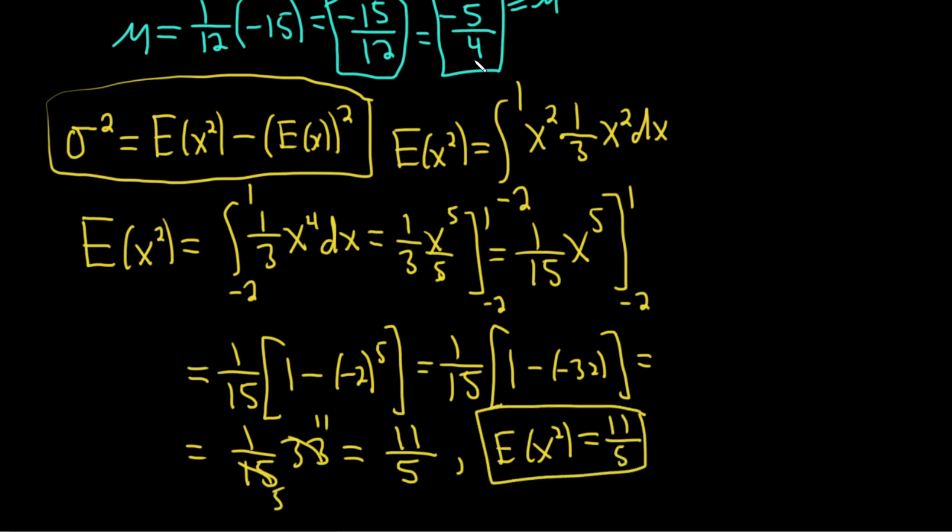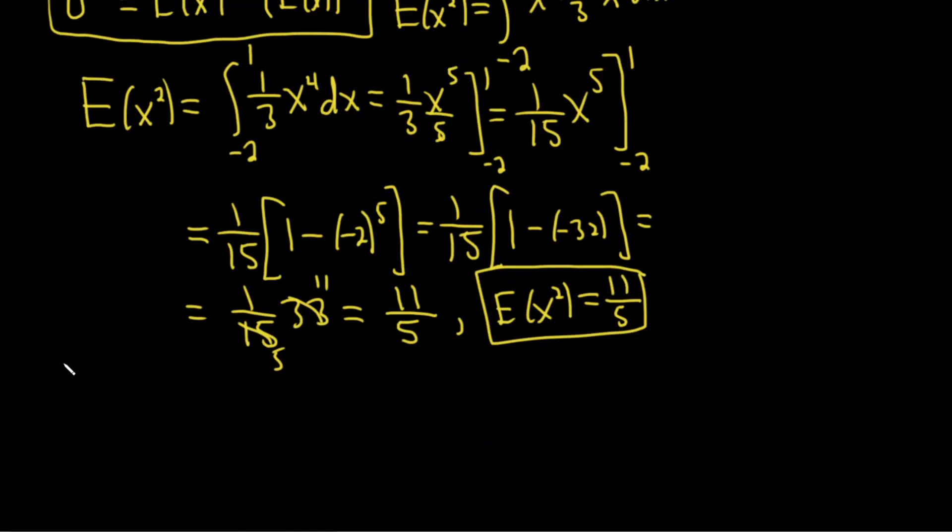Recall μ is negative 5 fourths. Using our formula, σ squared equals E(x²) minus μ squared. This is 11 fifths minus negative 5 fourths squared.